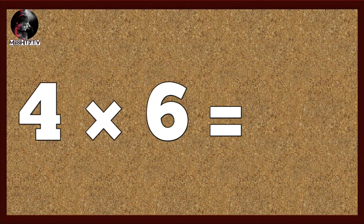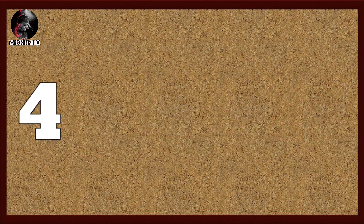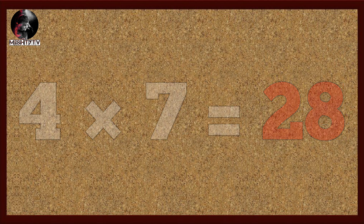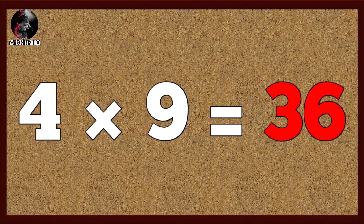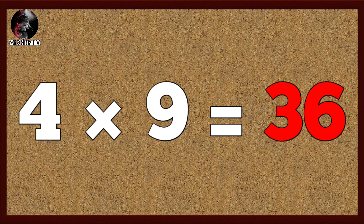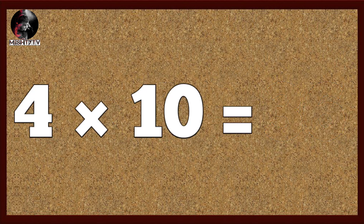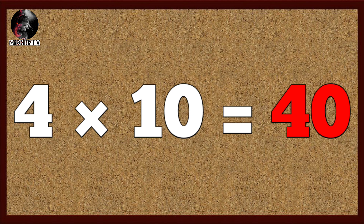Four six's are twenty-four, four seven's are twenty-eight, four eight's are thirty-two, four nine's are thirty-six, four ten's are forty.